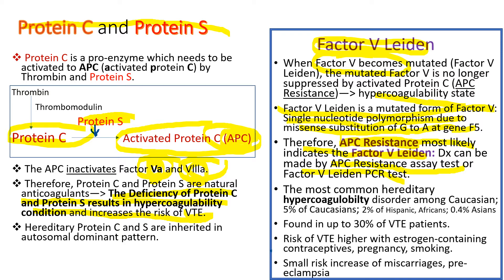Factor V Leiden is the most common hereditary hypercoagulability disorder among Caucasians, occurring in 5% of Caucasians. It is less common in Hispanics and Africans, and very rare in Asians. The risk of venous thrombosis goes up even higher when affected individuals take estrogen-containing oral contraceptives, during pregnancy when hormone levels are high, or when patients smoke. There is also a small increased risk of miscarriage and preeclampsia.